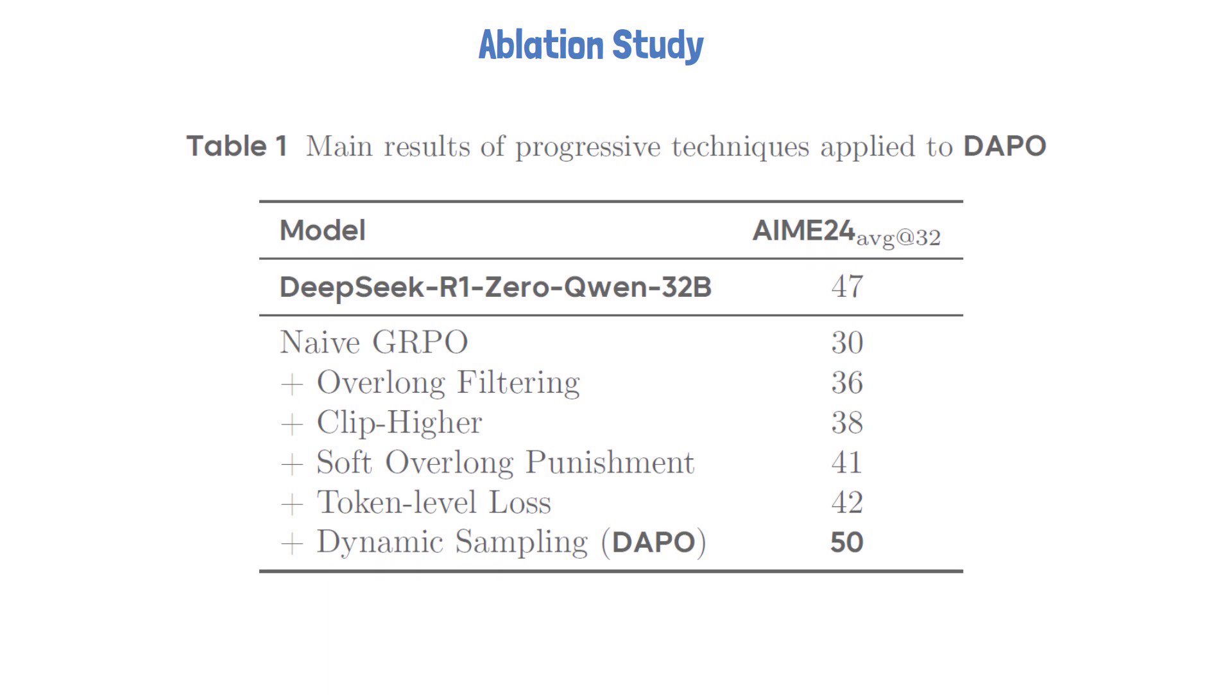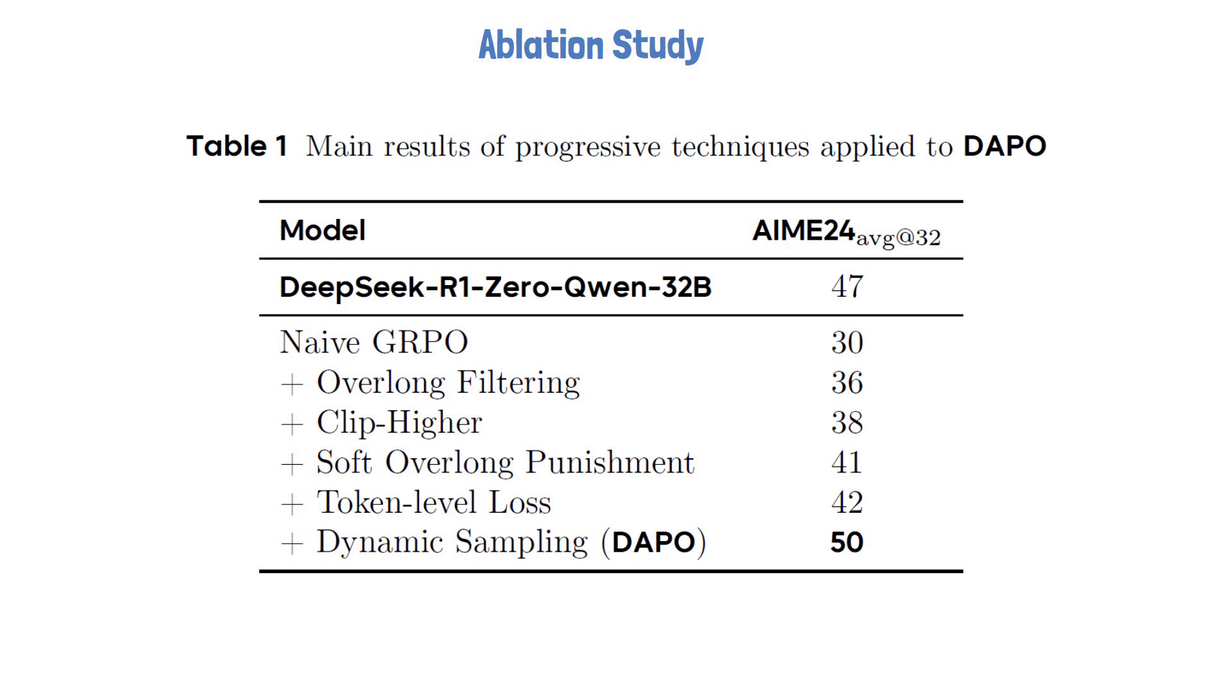Let's now see the impact of all of the techniques we covered by looking at an ablation study results from the paper presented in the following table. At the top we see DeepSeek R1 score of 47 points on AIME 2024. As mentioned at the beginning, the initial GRPO training achieved only 30 points, and the techniques we covered are gradually added, each contributing to improving DAPO score to 50, outperforming the 32 billion parameters version of DeepSeek R1.